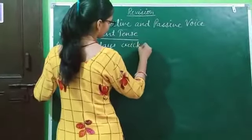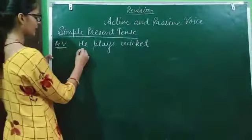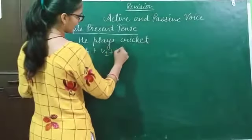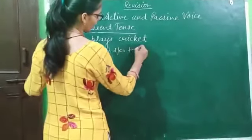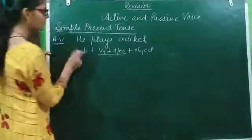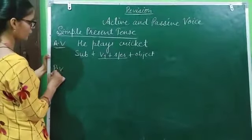As you can see here, that's the structure: Subject plus verb first form plus S or ES, and then object. This is the main structure for the simple present tense in the active voice. Now, for the passive voice, what you have to do?